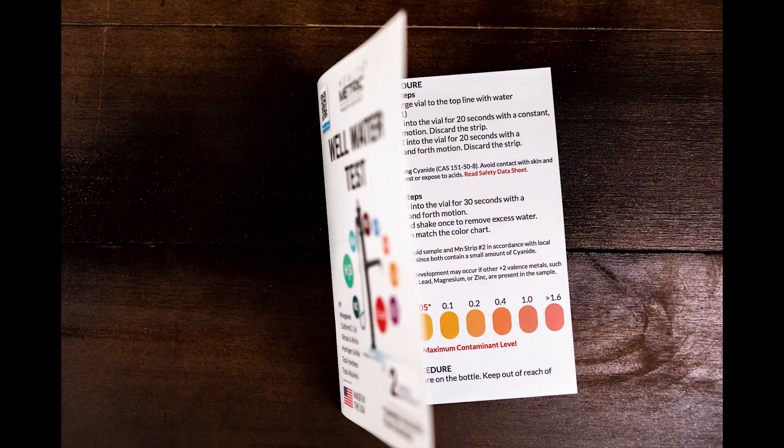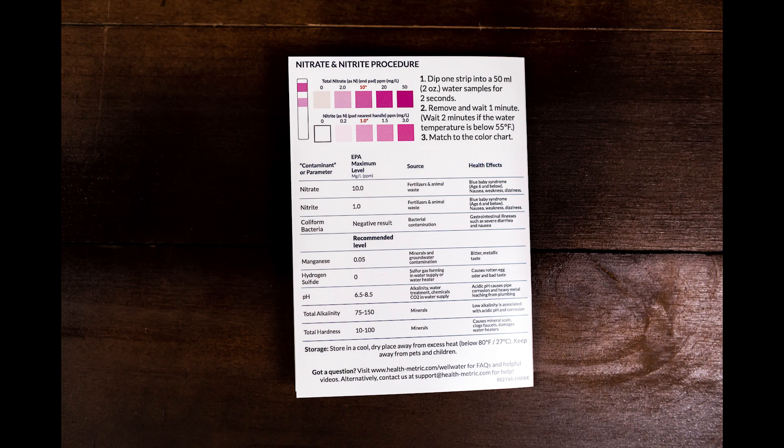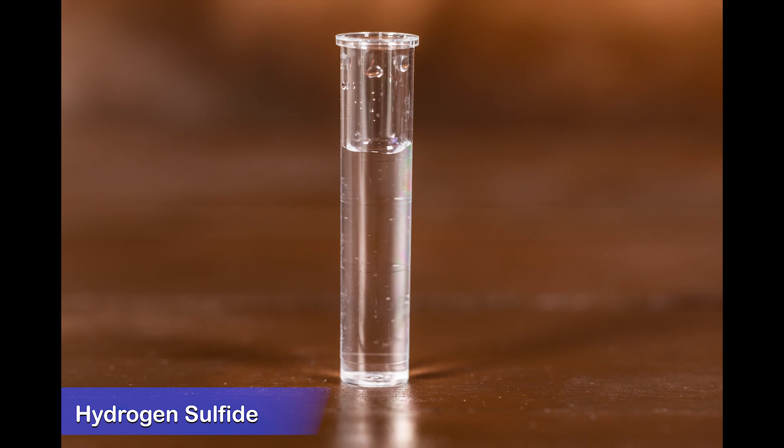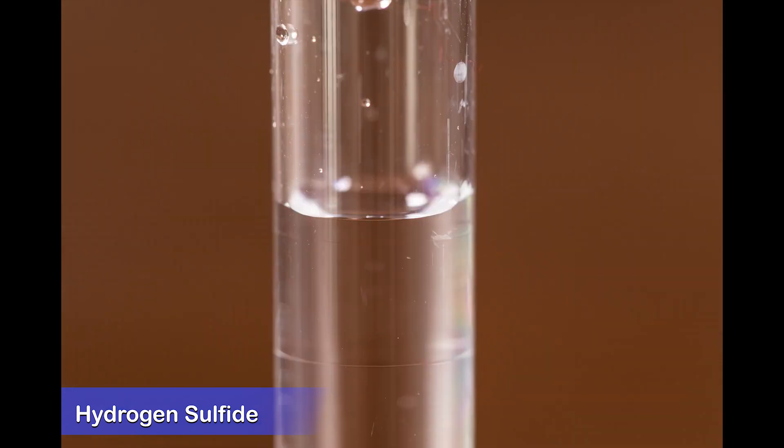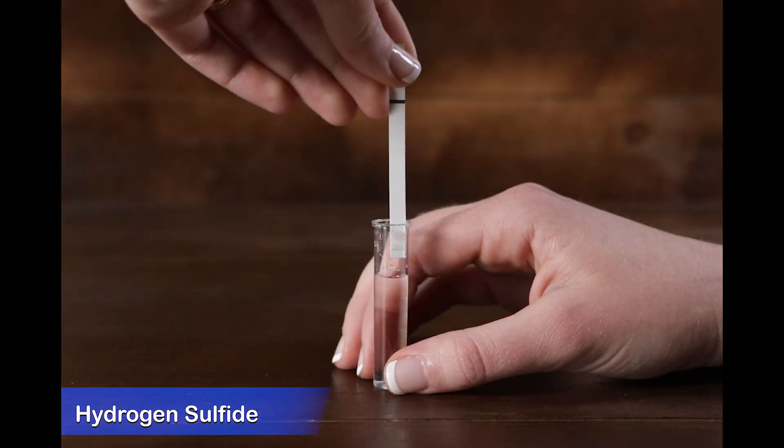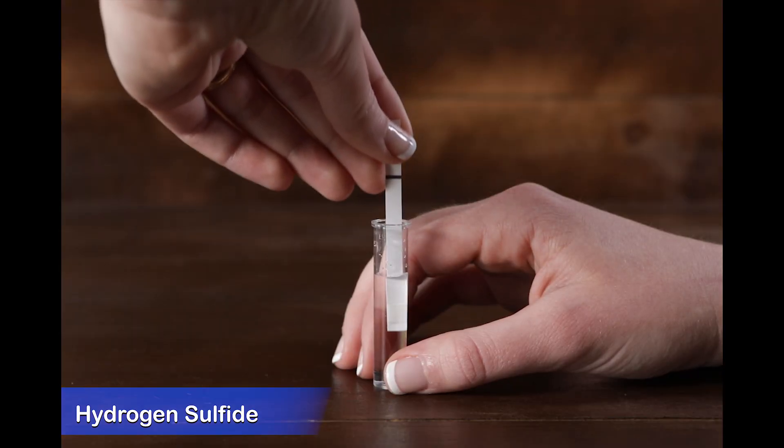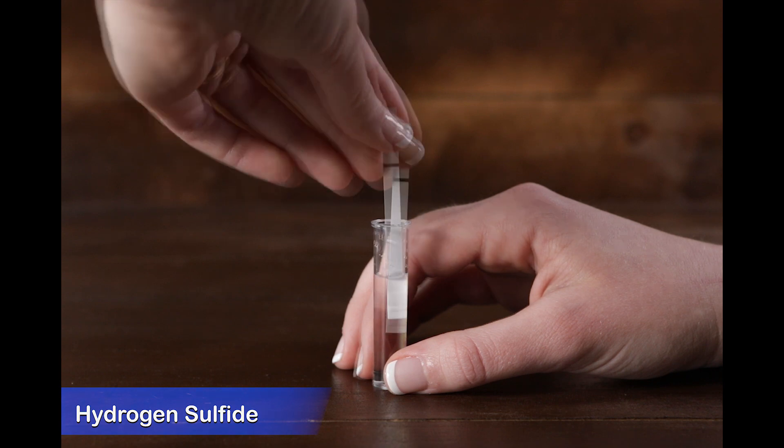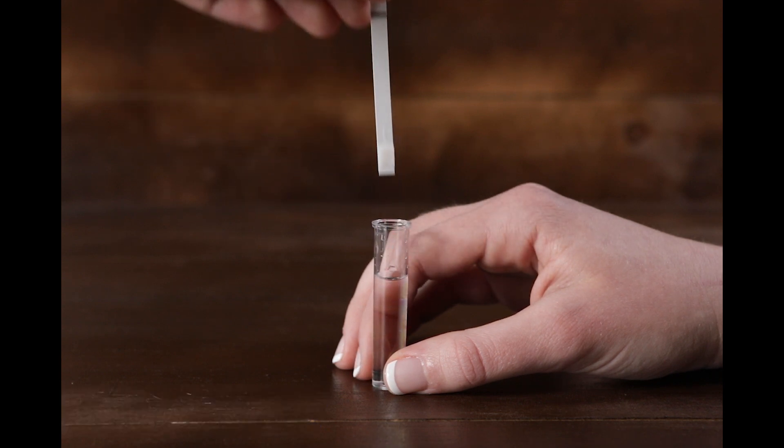The testing guide provides step-by-step instructions for using the kit. The hydrogen sulfide test uses the small clear vial. Fill the vial to the top line with water. Dip the strip into the vial for 20 seconds using a steady up and down motion. Remove and discard the strip.